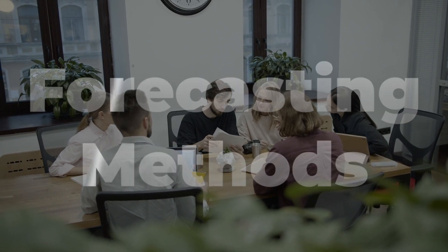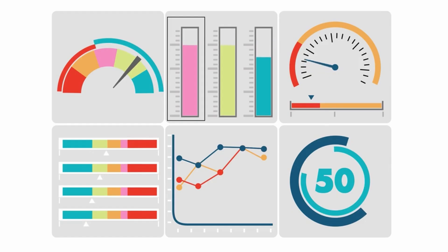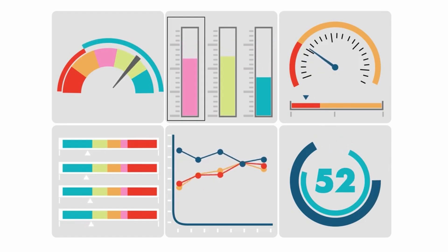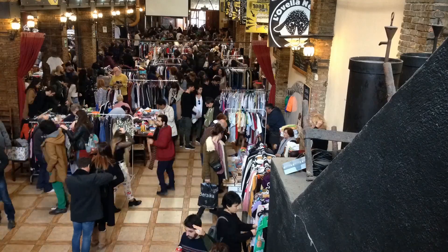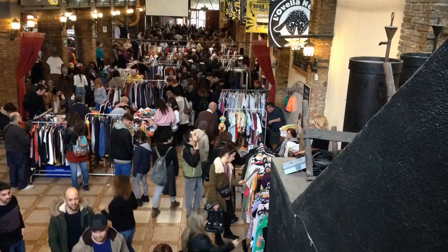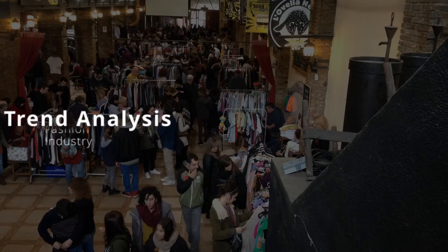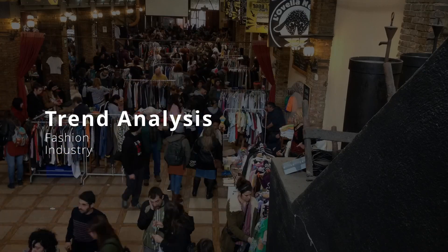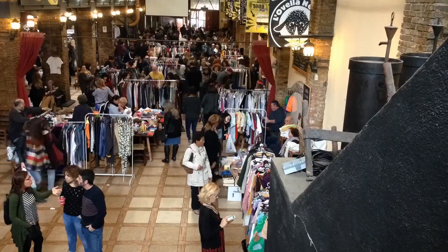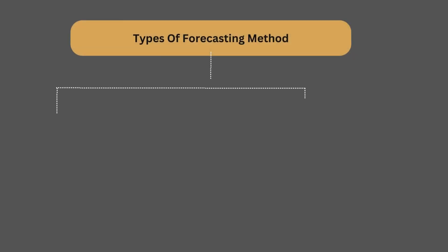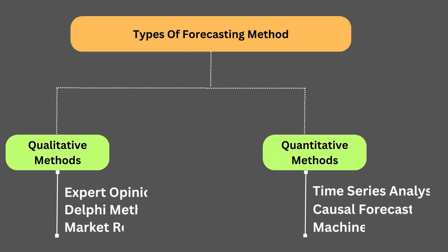Let's check out various methods of demand forecasting. Demand forecasting can use historical data, market research, statistical models, and even machine learning algorithms. Different methods suit different industries and scenarios. For instance, a fashion retailer might use trend analysis while a tech company could lean towards quantitative methods. Basically, there are two broad categories: qualitative and quantitative, each with various methods.